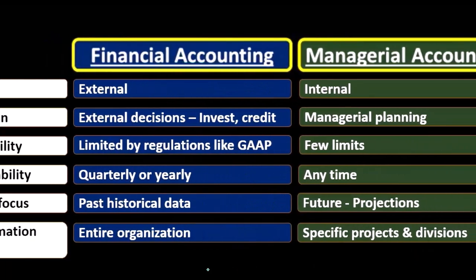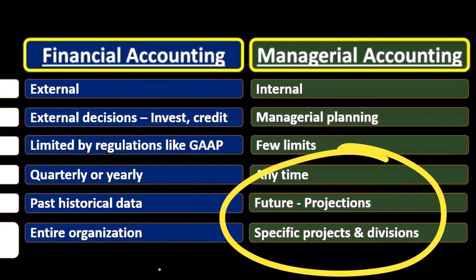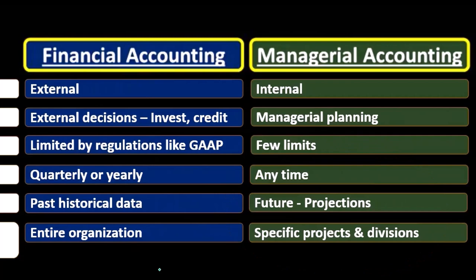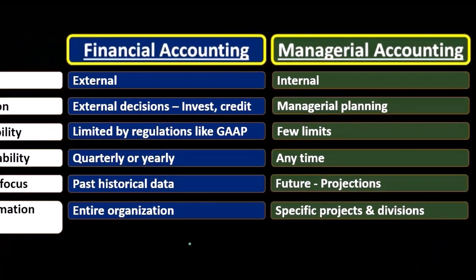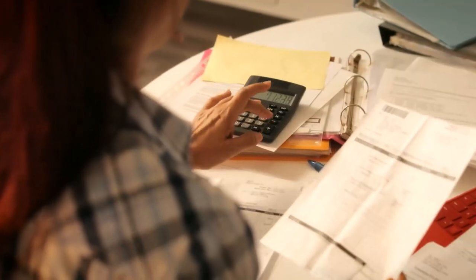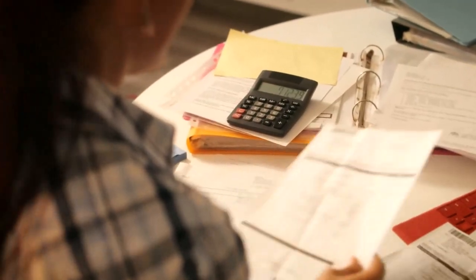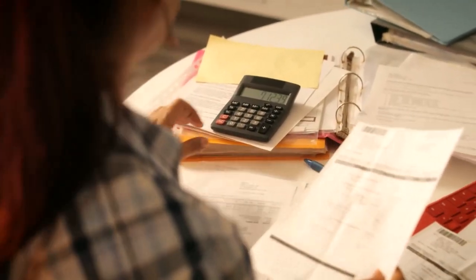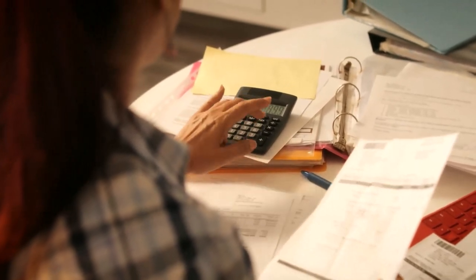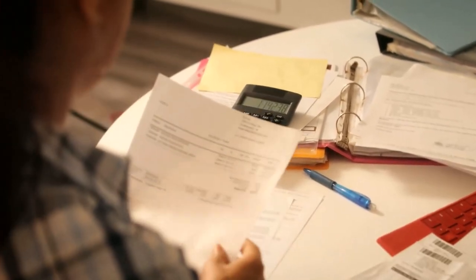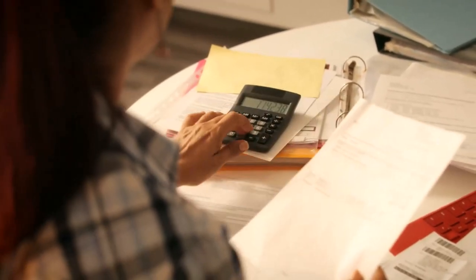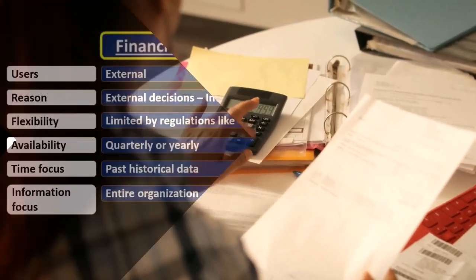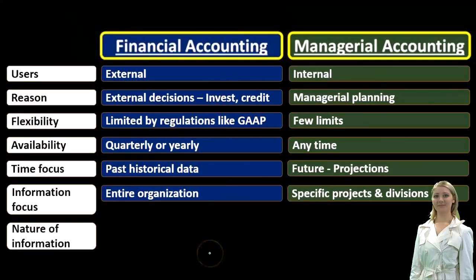In managerial accounting, we're typically going to go more into detail. We're going to look department by department, product by product, and try to make those decisions. So typically, financial accounting is looking at the big picture — how do we stand overall? — whereas managerial accounting is going to go down into more of the nitty gritty and try to figure out what we can do from a piece-by-piece standpoint to improve operations.